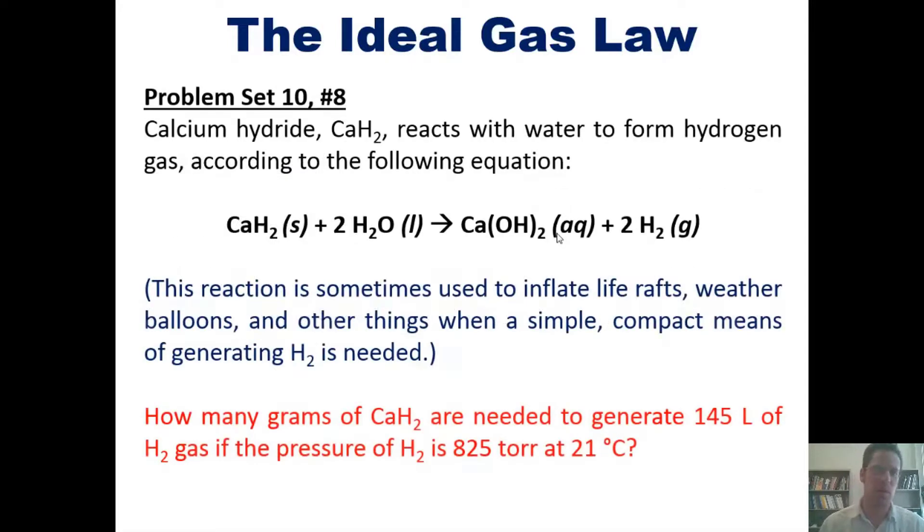In this problem, calcium hydride reacts with water to form hydrogen gas according to this equation. This chemical reaction, incidentally, is sometimes used to inflate life rafts, weather balloons, and other things when a simple compact means of generating H2 is needed. How many grams of calcium hydride are needed to generate 145 liters of hydrogen gas if the pressure of hydrogen gas is 825 torr at 25 degrees Celsius?